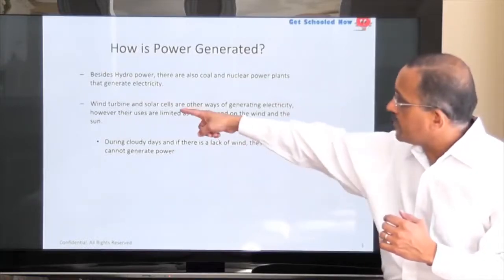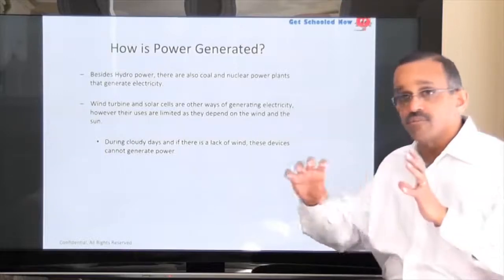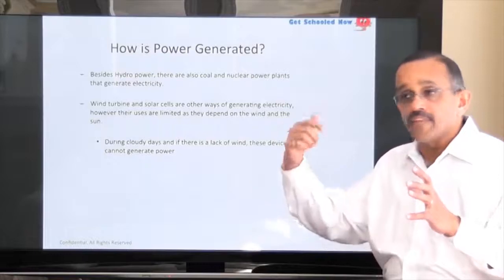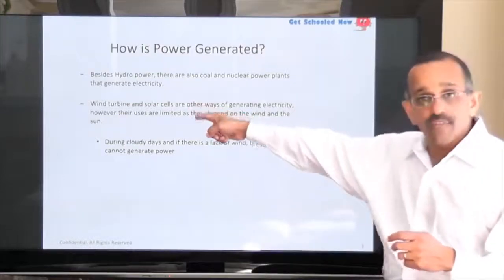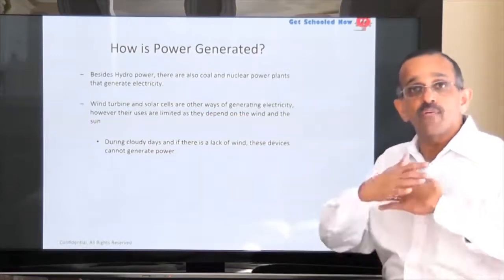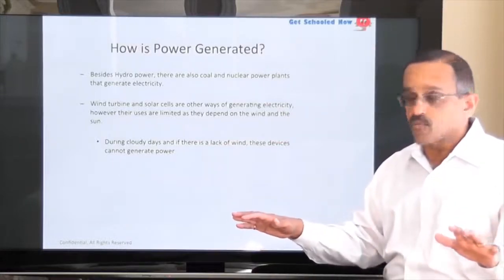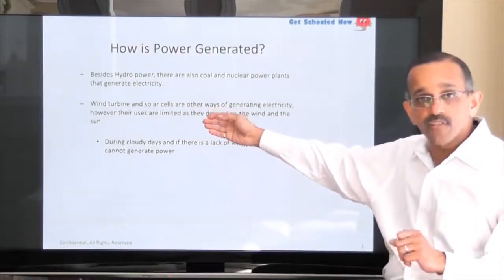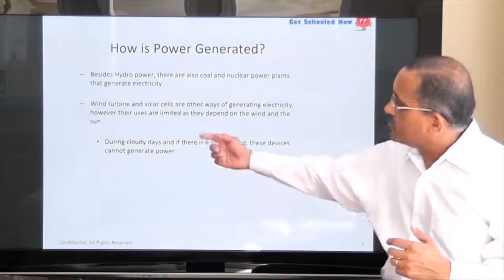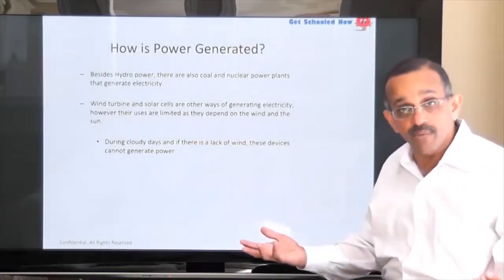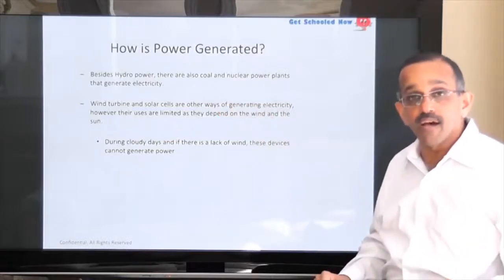With wind turbines and solar cells, it's exactly the same kind of model. You have wind which turns fan blades that are connected to a turbine, and the turbine is connected to a generator — so wind then generates power. Solar cells are another example; there's no turbine, but you have an array of solar cells and the light shines on them, generating power as well. However, there's a weakness with wind turbines and solar cells: during cloudy days or if there's no wind, you don't wind up generating any power. Those are the drawbacks associated with wind turbines and solar cells.